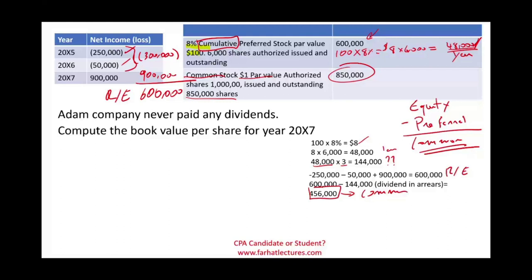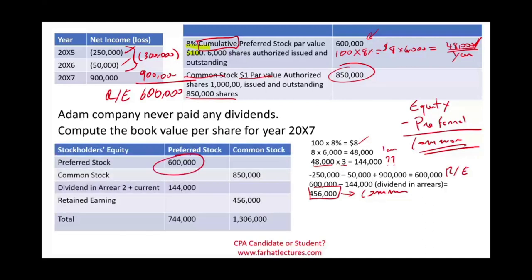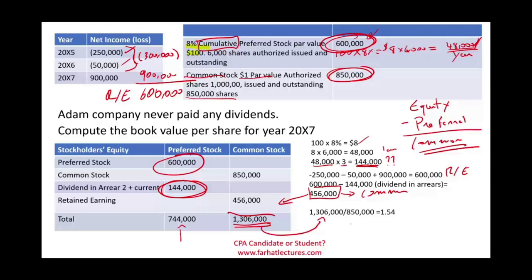Now we can compute how much equity belongs to the preferred and how much to the common. The preferred shareholders have $600,000 of preferred stock plus $144,000 of dividends, totaling $744,000. The common shareholders have $850,000 of common stock plus $456,000 of retained earnings, totaling $1,306,000. Dividing $1,306,000 by 850,000 shares, the book value per share is $1.54. We could also compute the preferred book value: $744,000 divided by 6,000 shares.